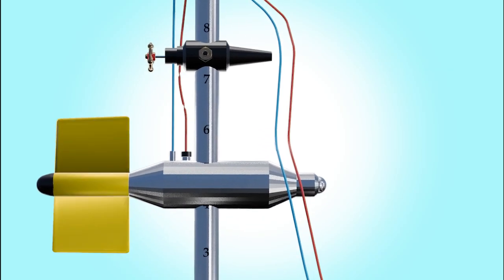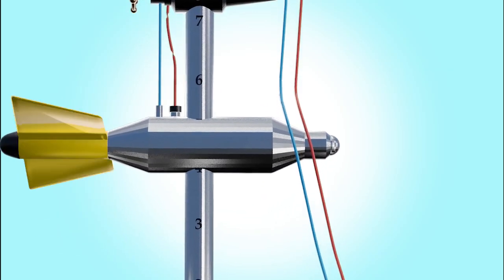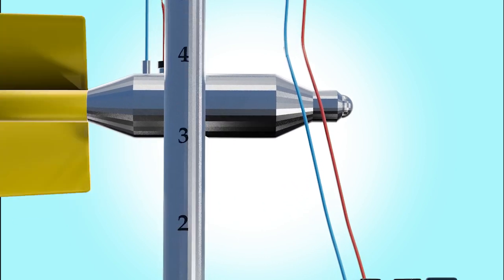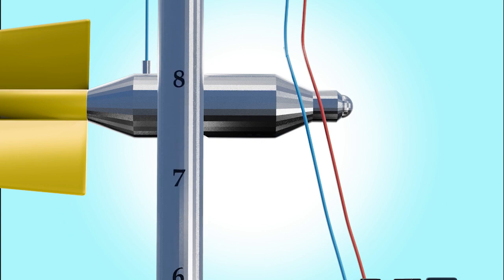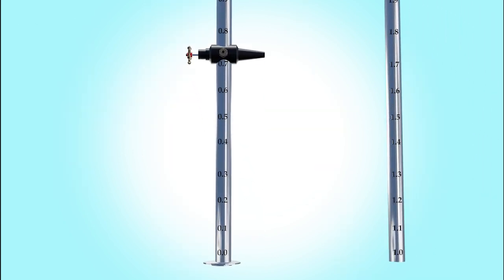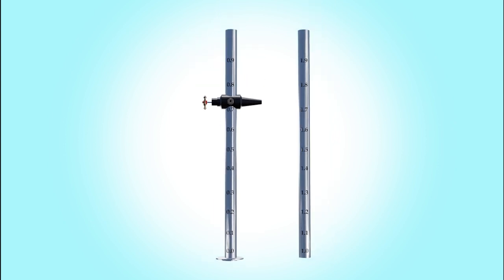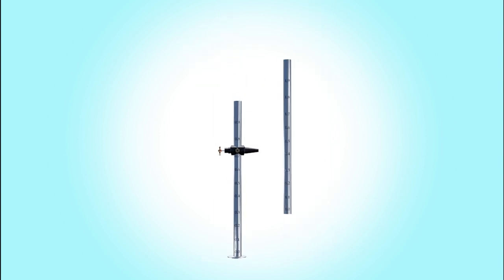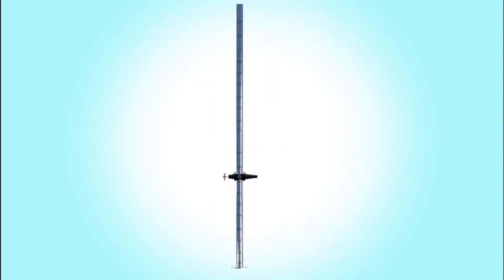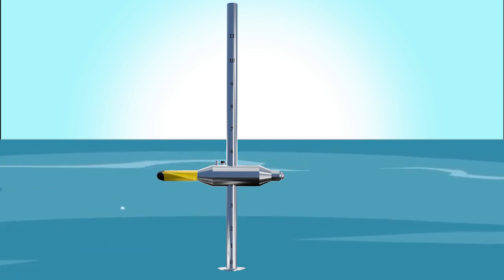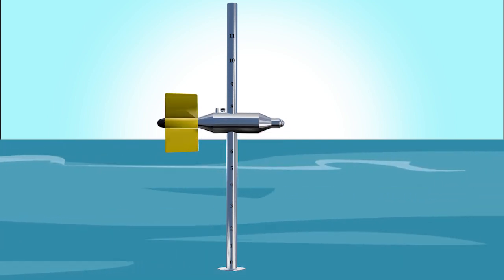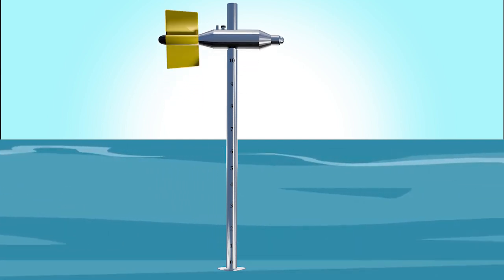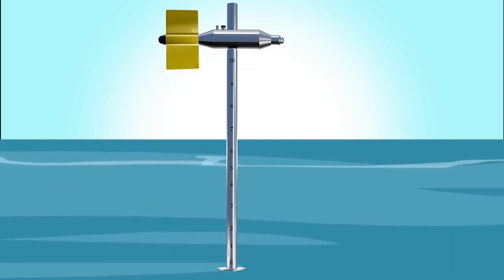The basic parts of a current meter are: number one, the rod. The rod is one meter in length and has graduations. This can be attached to other rods depending on the depth of the river that is being monitored. Then we have the fish-like weight which moves on the rod depending on the depth of the river.